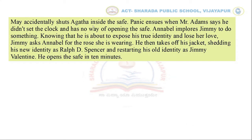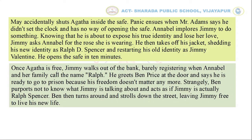May accidentally shuts Agatha inside the safe. Panic ensues when Mr. Adam says he didn't set the clock and has no way of opening the safe. Annabelle implores Jimmy to do something, knowing that he is about to expose his true identity and lose her love. Jimmy asks Annabelle for the rose she is wearing, then takes off his jacket, shedding his identity as Ralph Spencer and restarting his old identity as Jimmy Valentine.